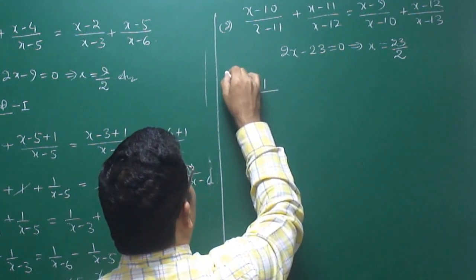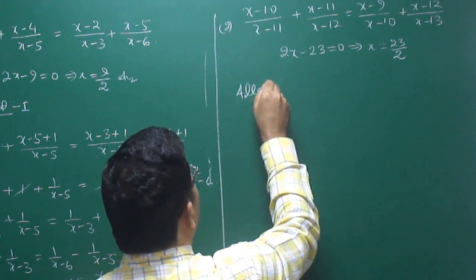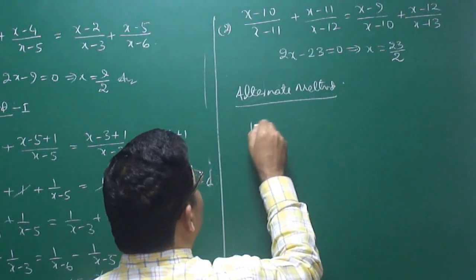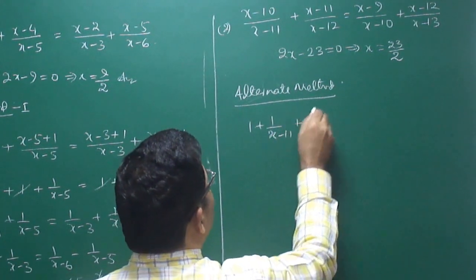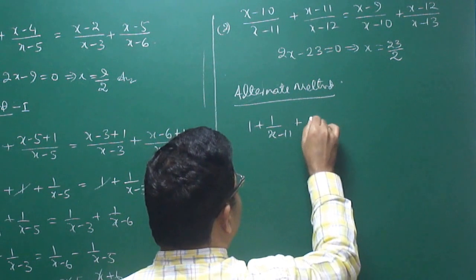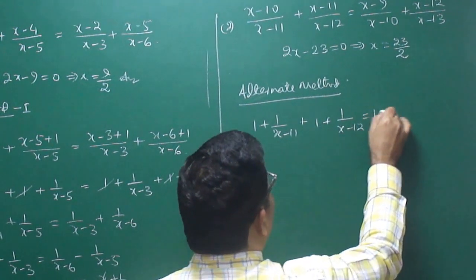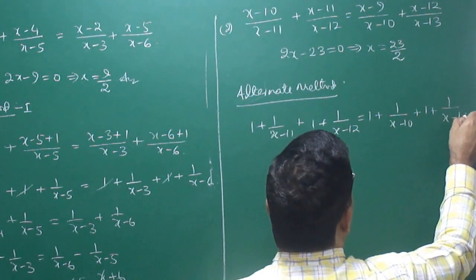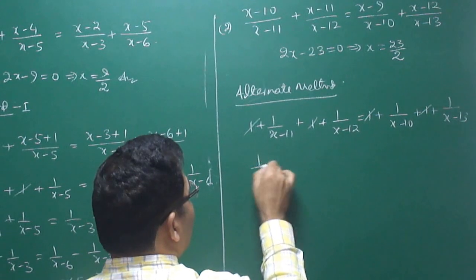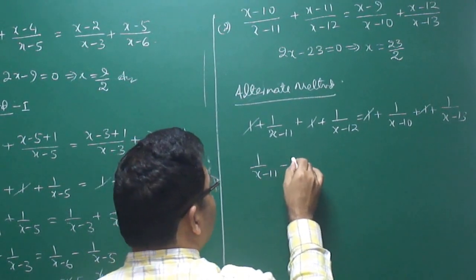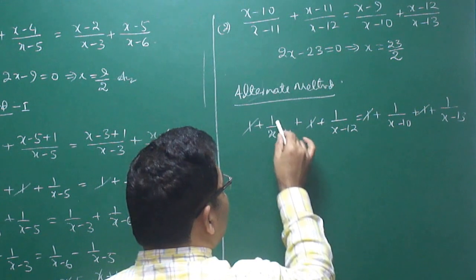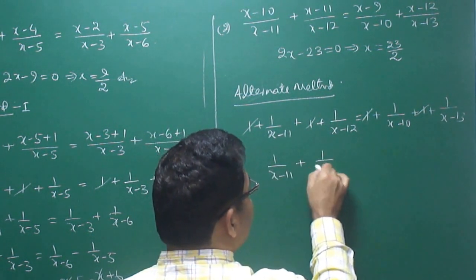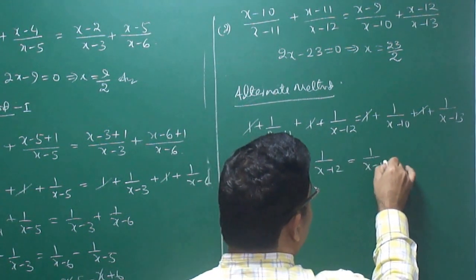Let me write that as an alternate method and verify again. We rewrite: 1 + 1/(x-11) + 1 + 1/(x-12) = 1 + 1/(x-10) + 1 + 1/(x-13). The 1s cancel on both sides. Now 1/(x-11) + 1/(x-12) = 1/(x-10) + 1/(x-13). This formula applies whether the constant is a number or a function — as long as the numerators sum to 2, you can set the denominator sum to zero.